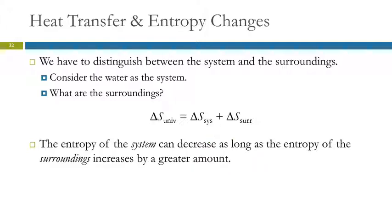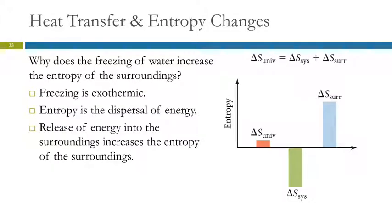The universe is composed of the system and the surroundings. So we could have the entropy of the system decreasing as long as the entropy of the surroundings increases. How or why does freezing water increase the entropy of the surroundings? Well, freezing is exothermic — it releases heat. That energy is dispersed into the surroundings. Entropy is a dispersal of energy, so the surroundings experience an increase in entropy.